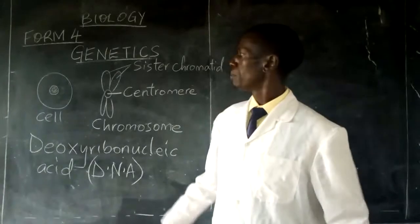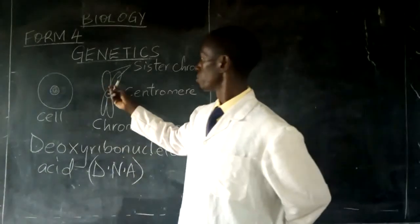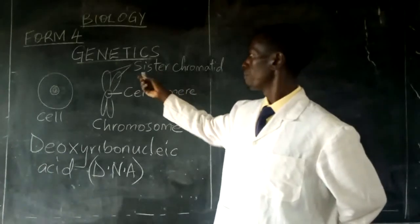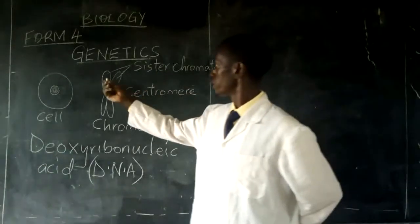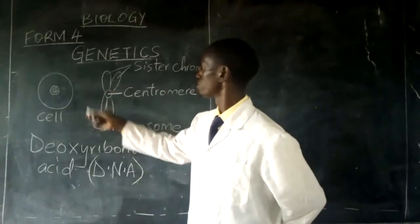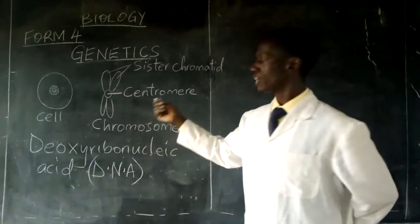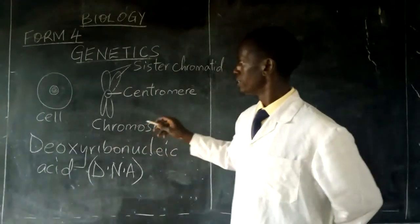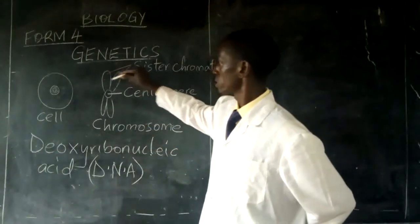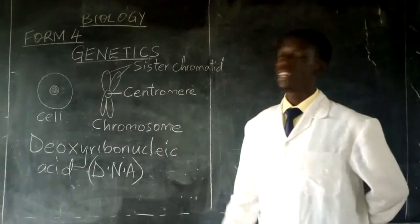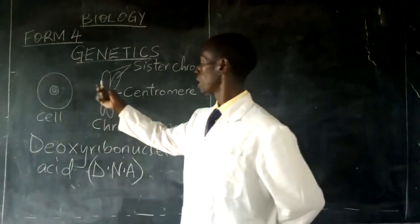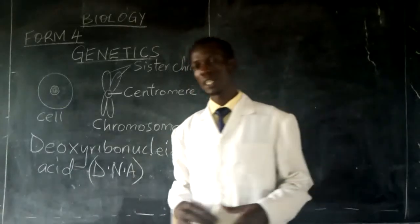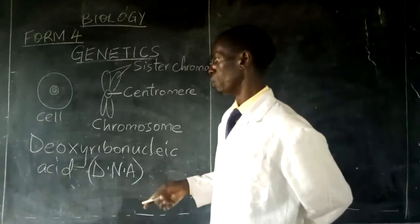Each chromosome is made up of two parallel strands which are referred to as the sister chromatids. They are joined at a point known as the centromere. Along the strand of each chromosome, there are various genes which are located there, and these are genes that control different characteristics found in different individuals.